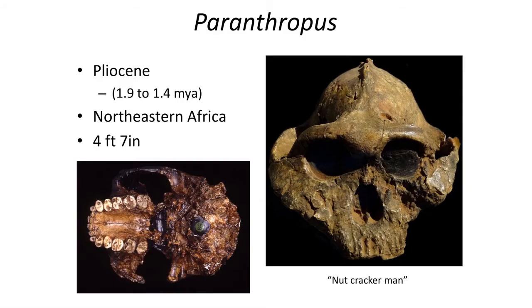Australopithecus was not the only early human-like fossil known from 4 to 1.8 million years ago. Around 1.9 to 1.4 million years ago in northeastern Africa, there was another genus: Paranthropus. Paranthropus was slightly bigger, about 4.5 feet tall, about the size of a 6 to 8 year old modern human. Paranthropus also differed in having a large sagittal crest, with very broad teeth that are highly worn but with robust enamel.